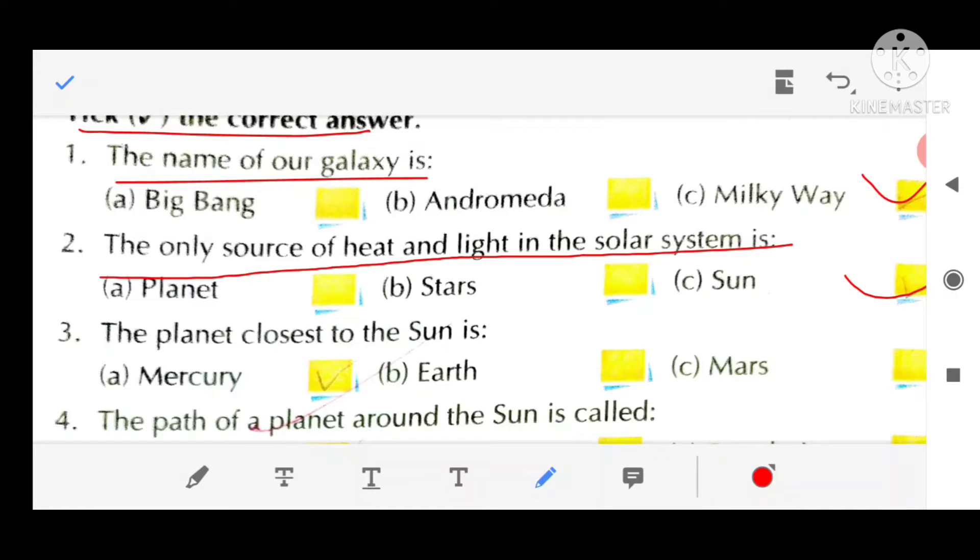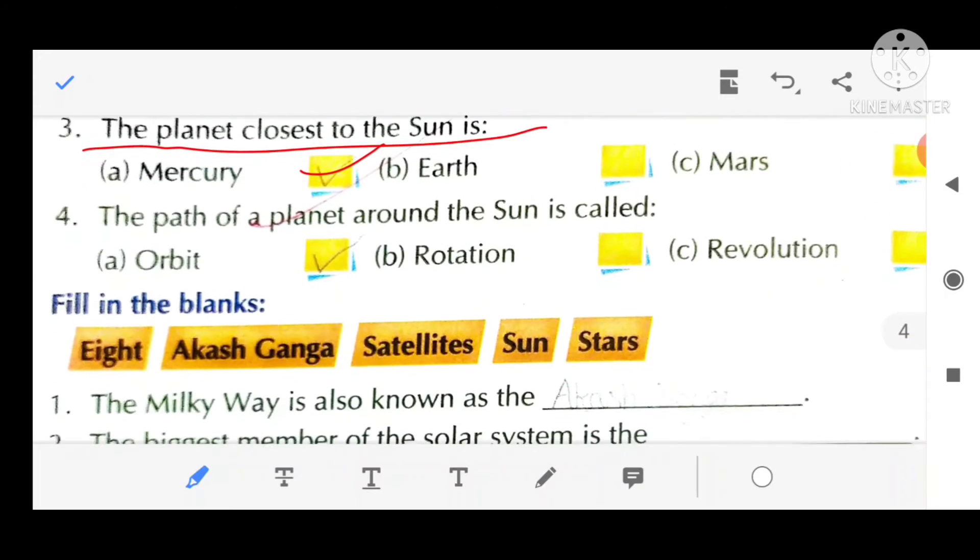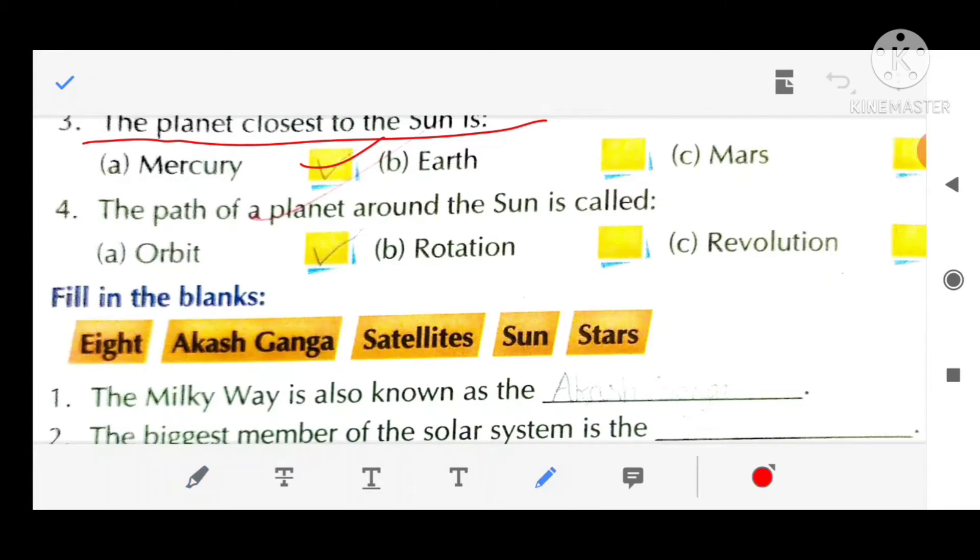Third, the planet closest to the sun is Mercury. Fourth, the path of the planet around the sun is called orbit. Fill in the blank.